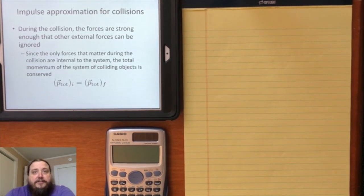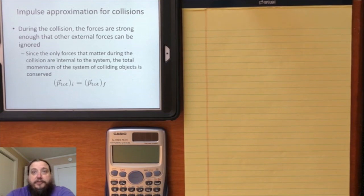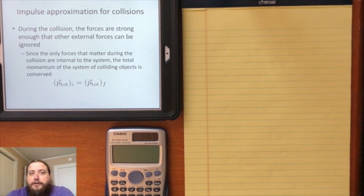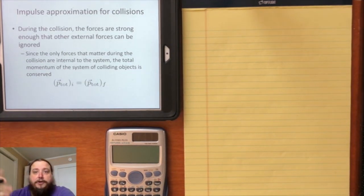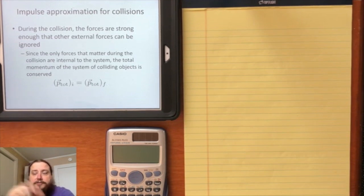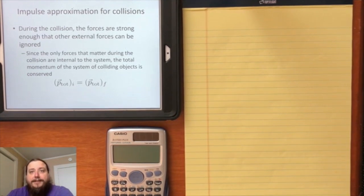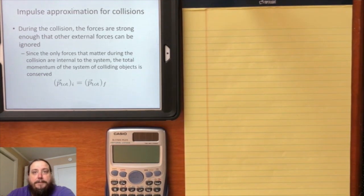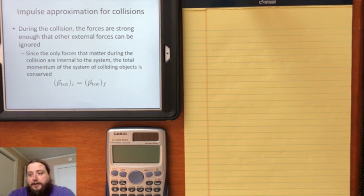Capturing all the details of a car accident in a physics model is going to be very, very difficult, and generally we don't try very hard, certainly not in the context of a course like this. But if we think about the forces involved in that collision, there are very, very strong forces between the two colliding objects for the very brief period of time where the cars are still pushing on one another and bending and braking.